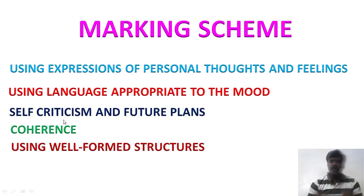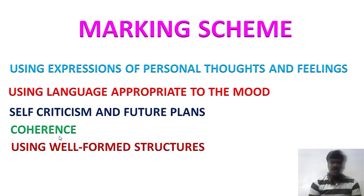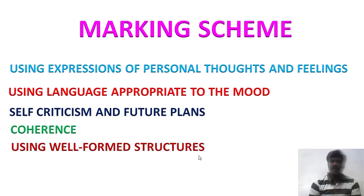Next is self-criticism and future plans — if you have done something wrong, you can criticize yourself in the diary, and you can also include future plans. Then there is coherence, which is the correct organization of ideas and using well-formed structures. Correct sentence formation is also needed. Each marking criterion carries one mark, so a total of five marks are awarded for diary entry.